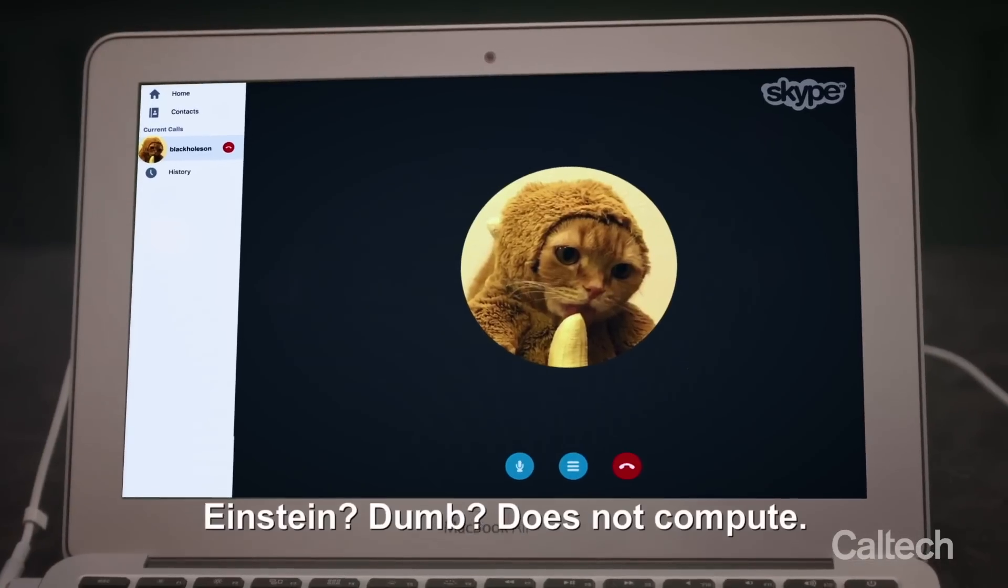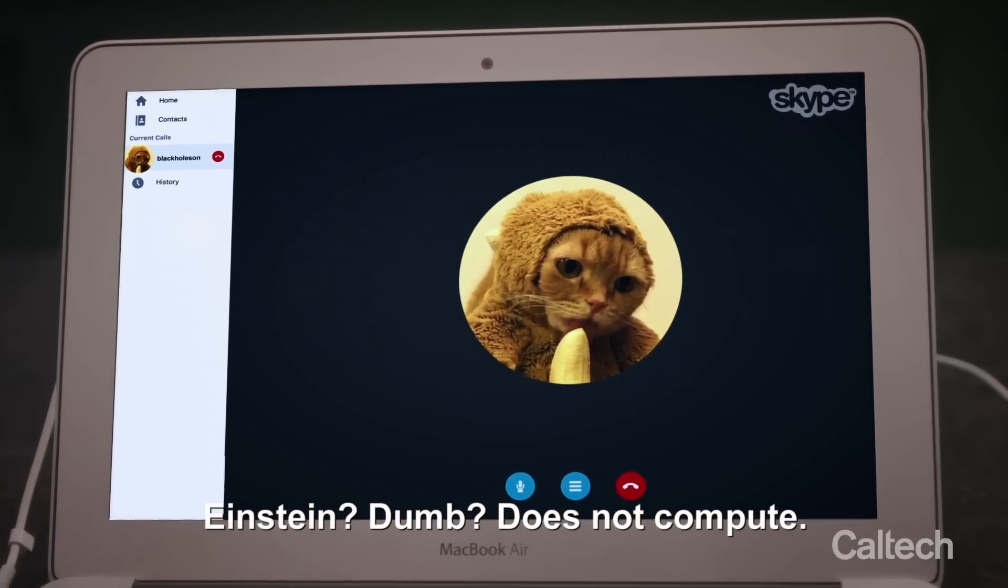And besides, for Einstein to think that entanglement was too spooky to be real, is just, you know, it's dumb. Einstein, dumb, does not compute. How many bell tests does it take? Jeez.